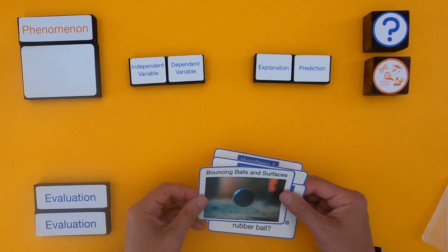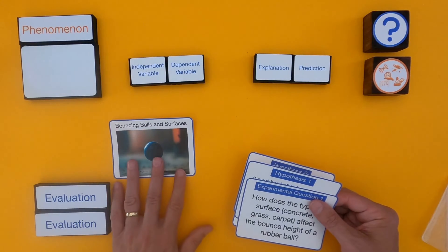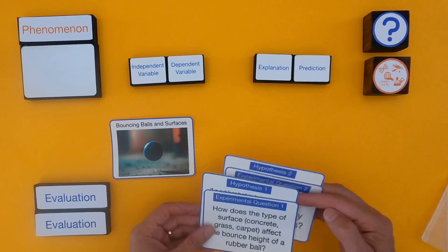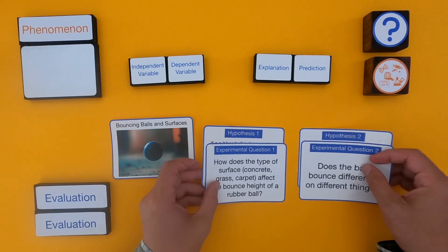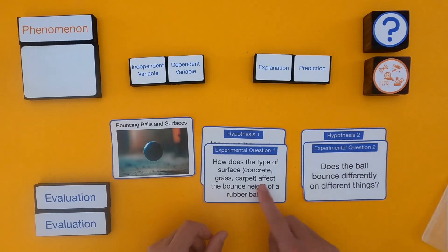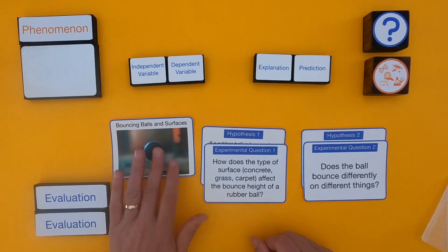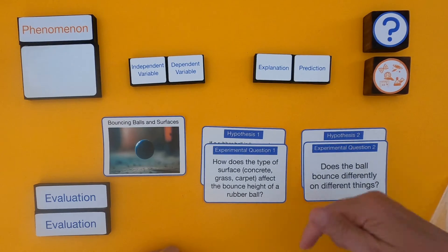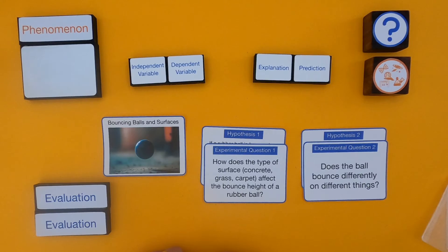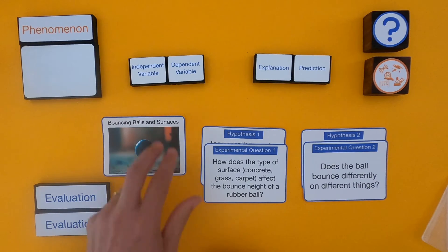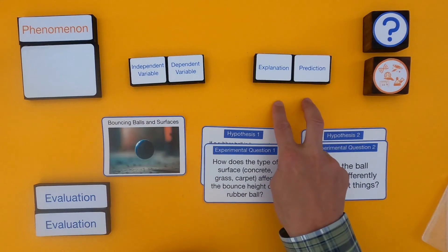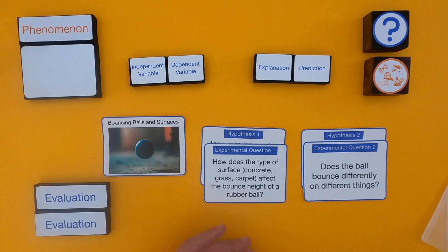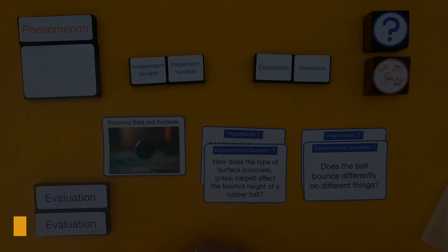For the next one, you're going to be looking at a phenomenon of bouncing balls and surfaces. We've got an experimental question and hypothesis from two different students. I would encourage you to pause the video — I'll put links in the slides below — and go through and evaluate these questions and hypotheses. Then unpause the video, come back, and I'll show you my thinking.